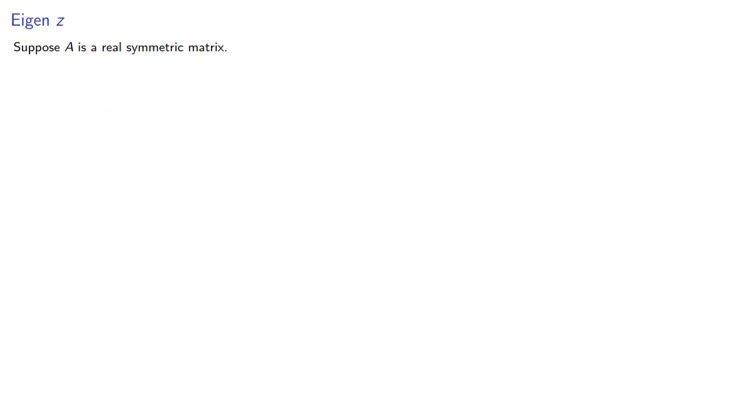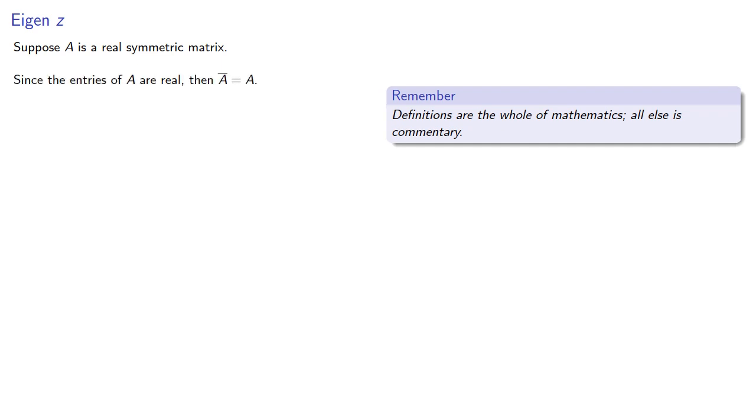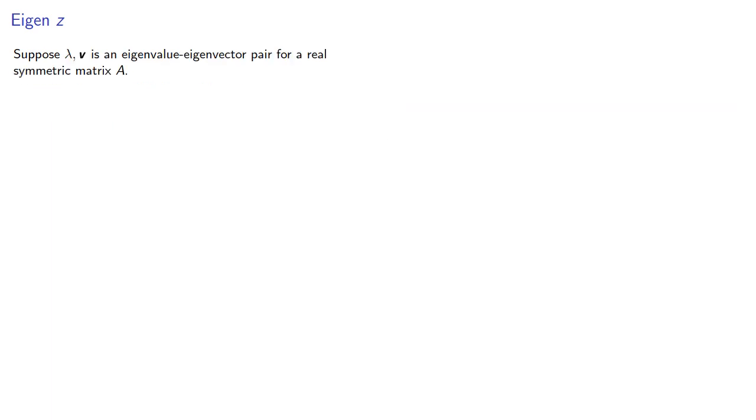Suppose A is a real symmetric matrix. So remember, definitions are the whole of mathematics, all else is commentary. So we might have complex values, but because all the entries of A are real, then the conjugate of A is just A itself. And since A is symmetric, A is A transpose.